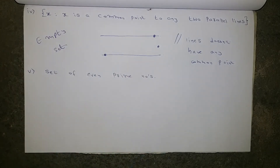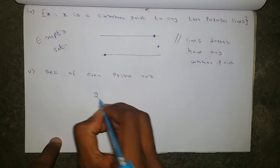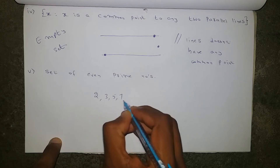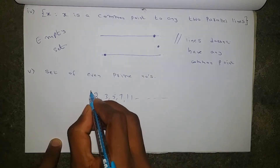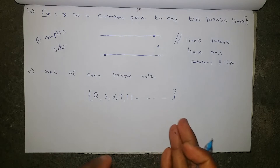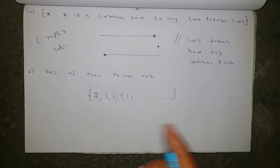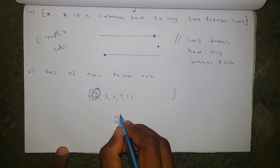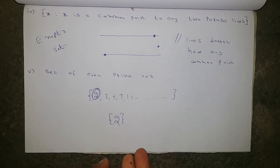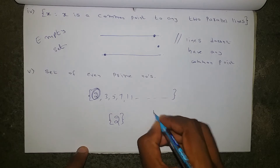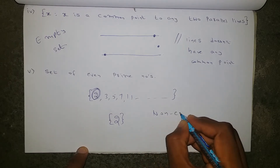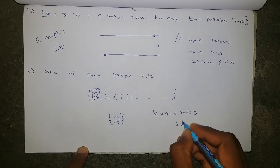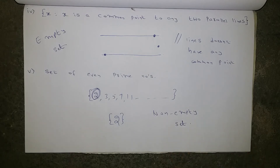Next one: the set of even prime numbers. In the total prime numbers list — 2, 3, 5, 7, 11 and so on — only one number is even, and that is the number 2. So one element is there, which means it is not an empty set.